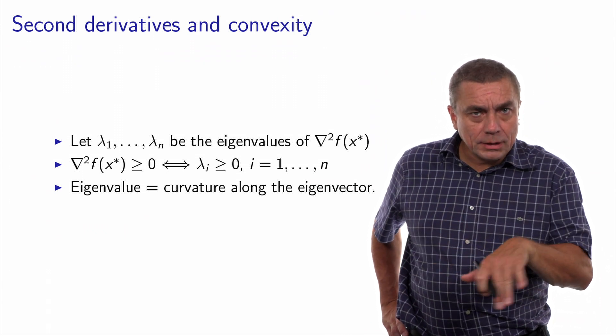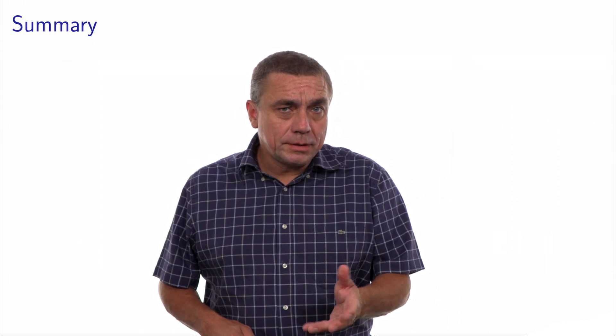So we have seen in this short video a classical result from analysis that says that if x star is a local minimum, then the first derivative is equal to zero, and the second derivative is positive semi-definite.